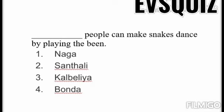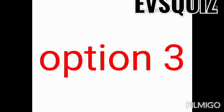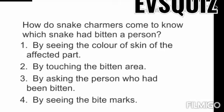The correct answer for '___ people can make a snake dance by playing the bean' is option number three. I hope you are all giving correct answers. Next question: 'How do snake charmers come to know which snake has bitten a person?' Option one: by seeing the color of skin of the affected part. Option two: by touching the bitten area. Option three: by asking the persons who had been bitten. Option four: by seeing the bite marks. Read all options carefully and think very properly students.